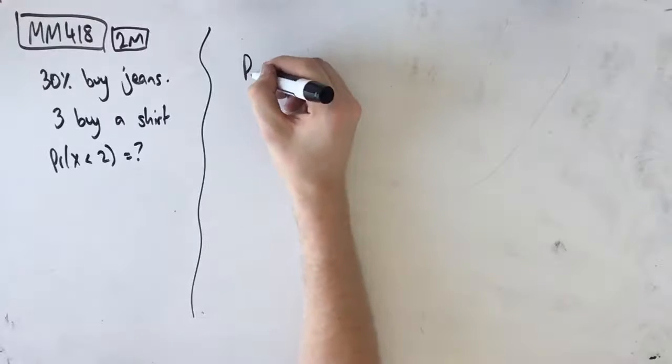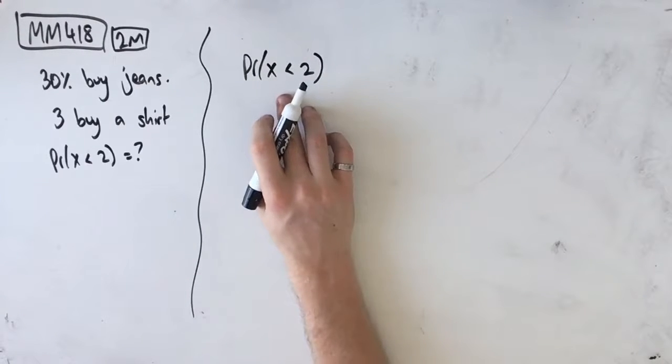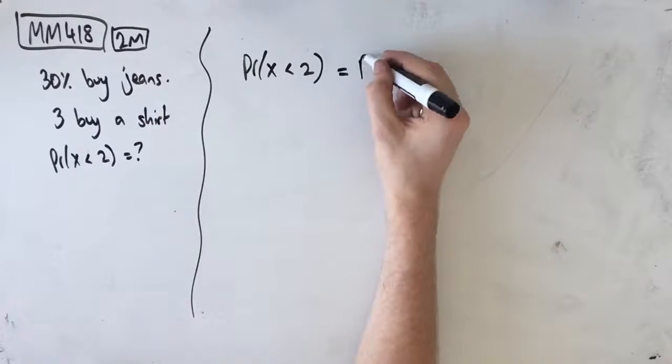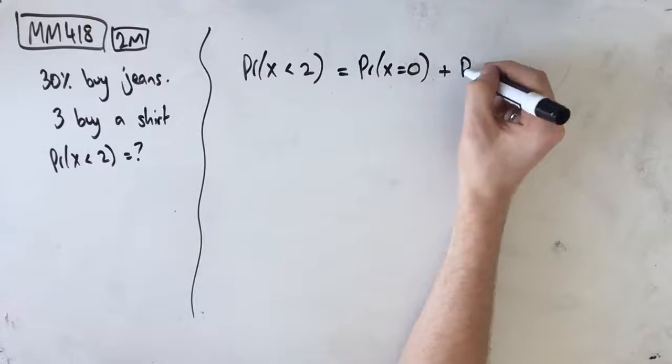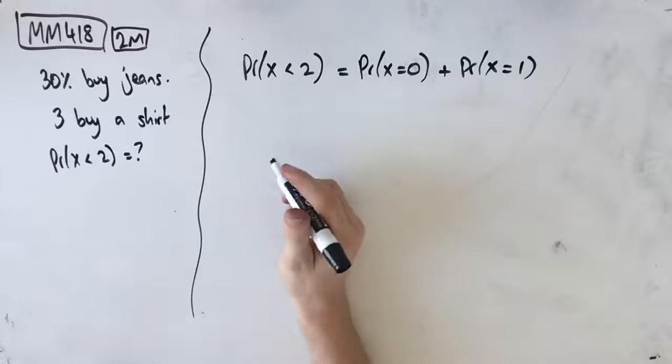In this case, we are looking for the probability that less than two of them buy jeans. I'm going to use X as the number of people who buy jeans, which means we're looking for the probability that none of them buy jeans and the probability that one of them buys jeans. This is the process we're going to follow here.